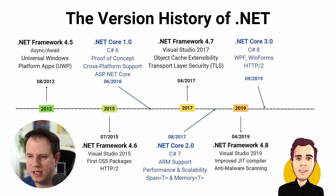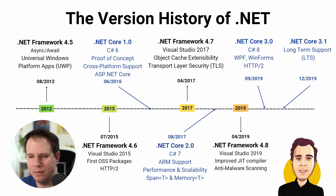.NET Core 3.0 was released on September 23rd, 2019, a few months after the final .NET Framework 4.8. It brought C# 8 and added support for Windows desktop application development with WPF, WinForms, and HTTP/2. .NET Core 3.1, a long-term support release that was highly adopted in the community, was released on December 3rd, 2019. Starting with .NET Core 3.1, there was a massive shift towards developing applications on the new .NET Core instead of the old .NET Framework.